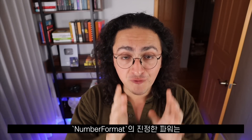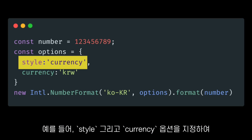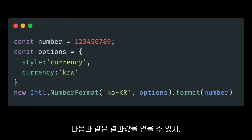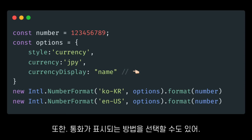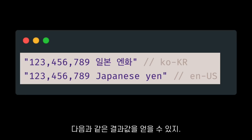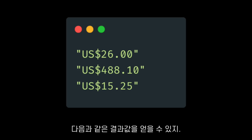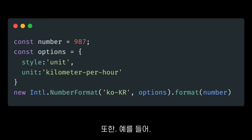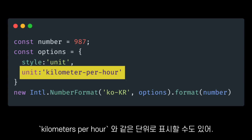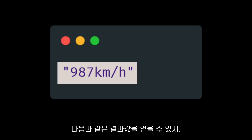The power of NumberFormat is in the options we can pass. For example, we can format our numbers as a currency by specifying the style and currency options to get an output like this. We can also choose how the currency should be displayed to get a different output. We can round amounts as well. We can also format our numbers as units like kilometers per hour by specifying the style and unit options, and that code will give us an output like this.